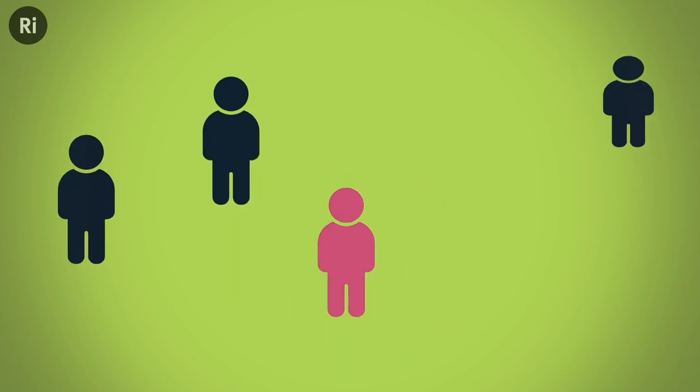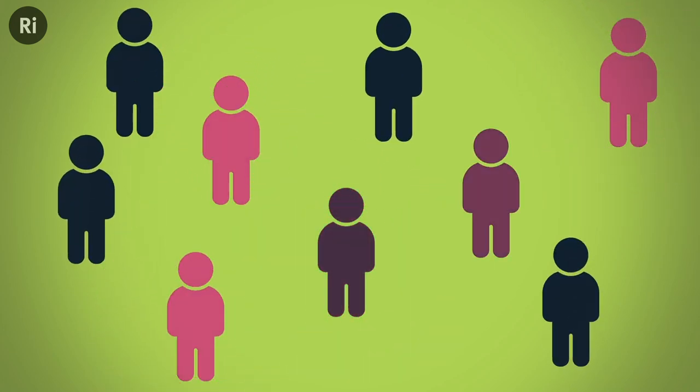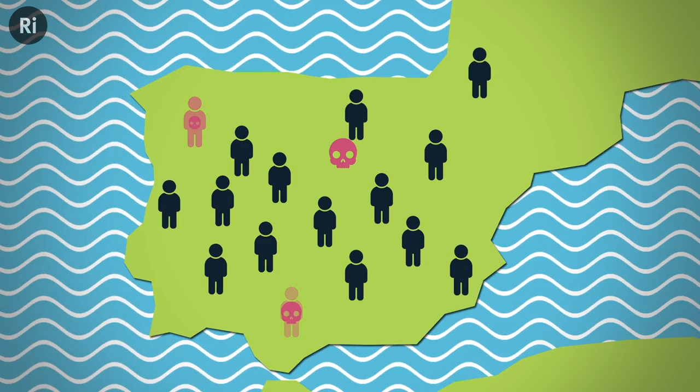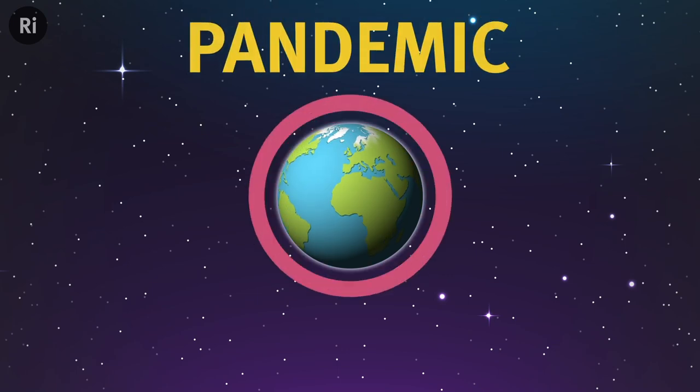An outbreak of a disease usually only causes a few cases. However, if the conditions are right, an outbreak can spread rapidly across countries, continents, or even the whole world, becoming a pandemic.